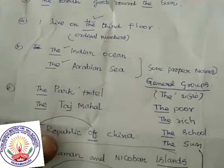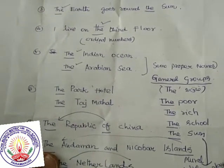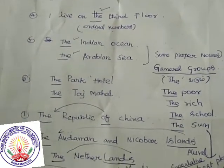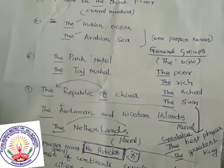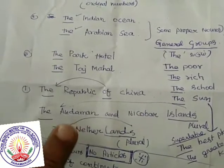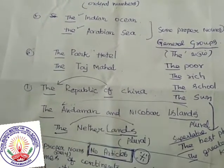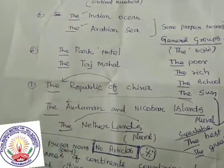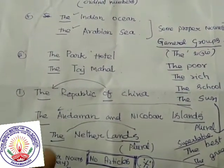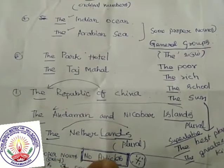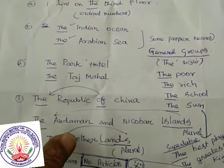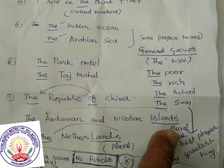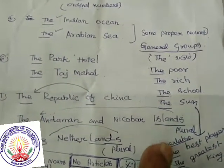The Park Hotel, the Taj Hotel — these are important places and monuments, so we put 'the'. The Republic of China — 'Republic' and 'China' are both connected by 'of', so we put 'the'. The Andaman and Nicobar Islands, the Netherlands — these are islands; the word ending is plural, so we put 'the'.